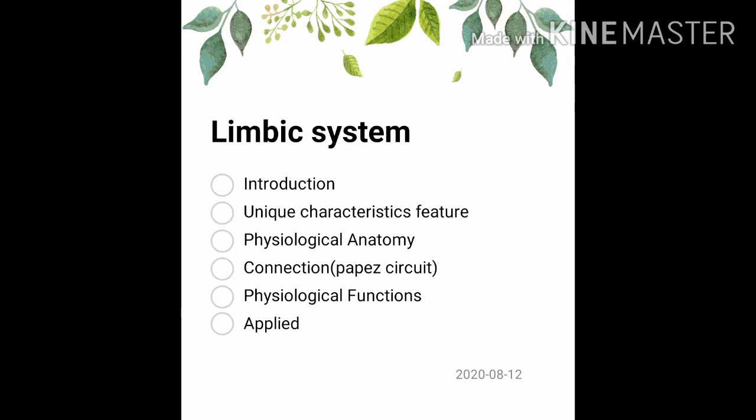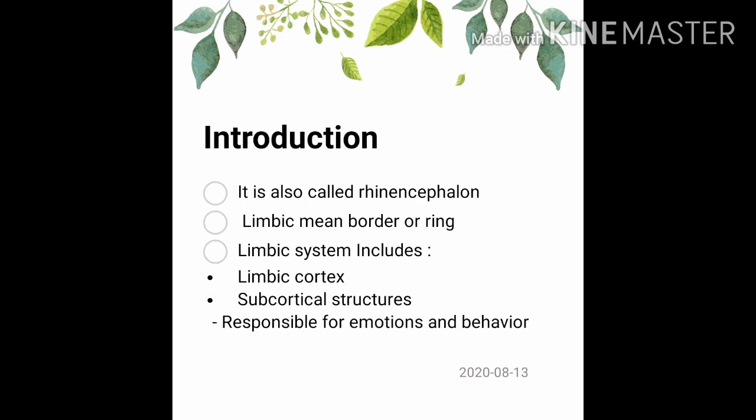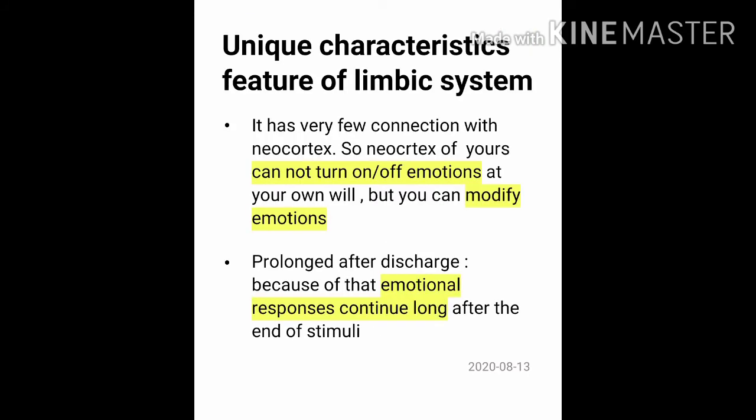In the limbic system, you have to cover the following points: introduction, unique characteristic features, physiological anatomy, the connections of the limbic system, physiological functions, and the applied aspects. Another name for this limbic system is rhinencephalon. The meaning of 'limbic' is a border or ring. The structures include the limbic cortex and subcortical structures, and it is responsible for emotions and behavior.